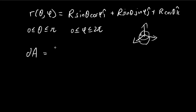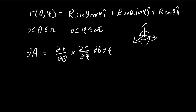The way we get dA: dA is equal to the partial derivative of r with respect to theta, cross the partial derivative with respect to phi, times d theta d phi. The reason for that is you can think of it as trying to cut up this sphere into tiny pieces and adding them all up together. The area of each tiny piece is found by taking these two vectors and doing the cross product.